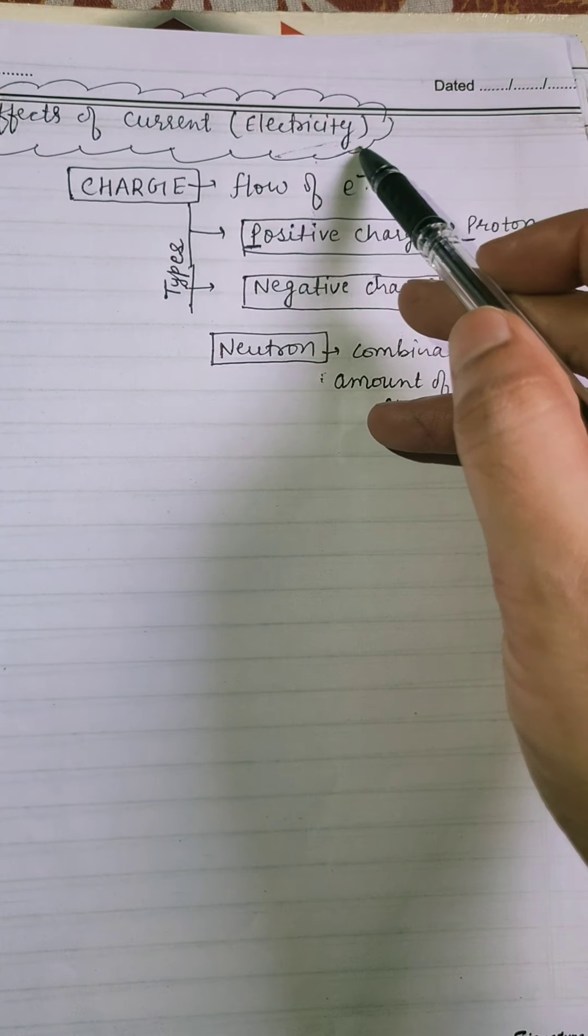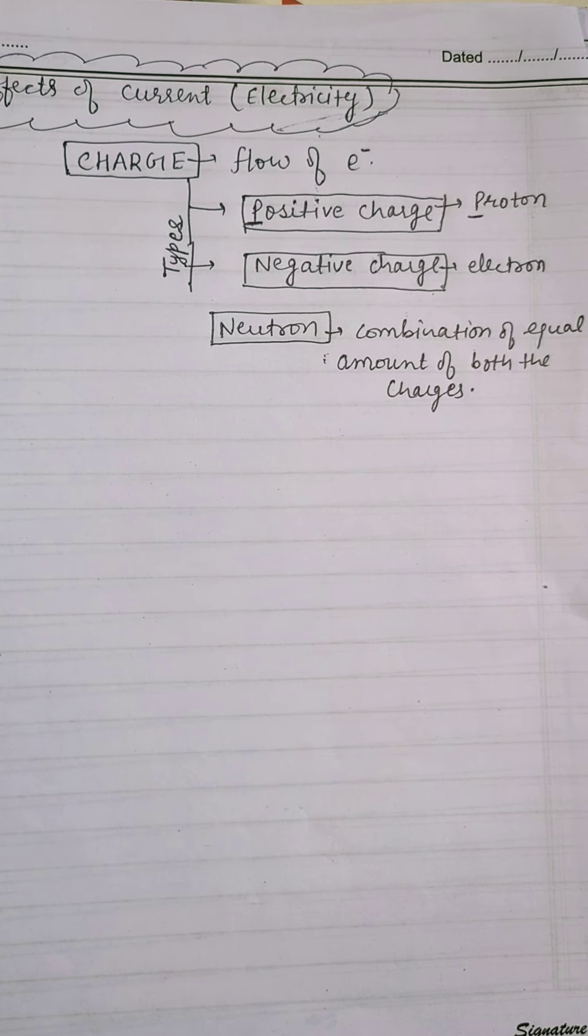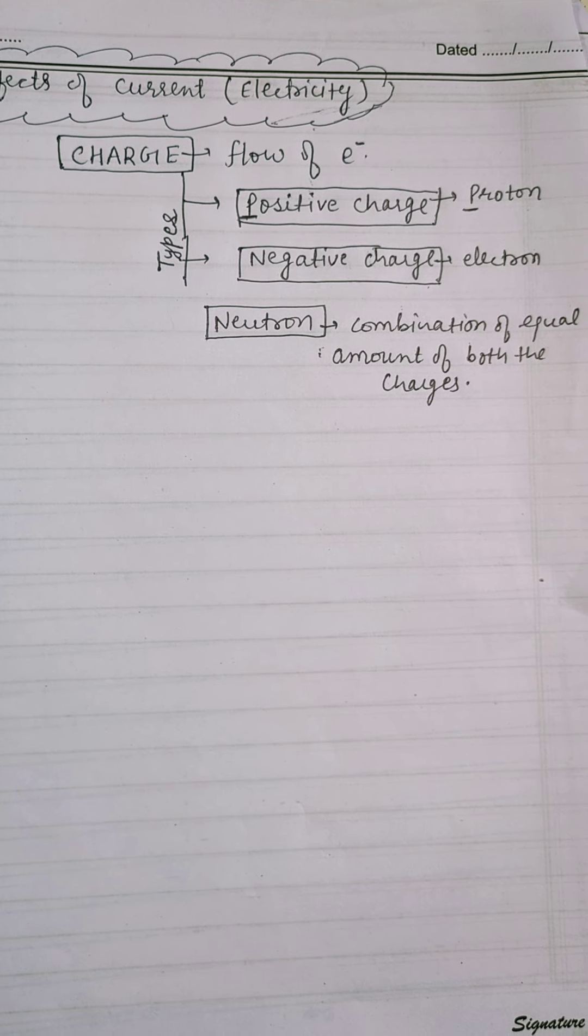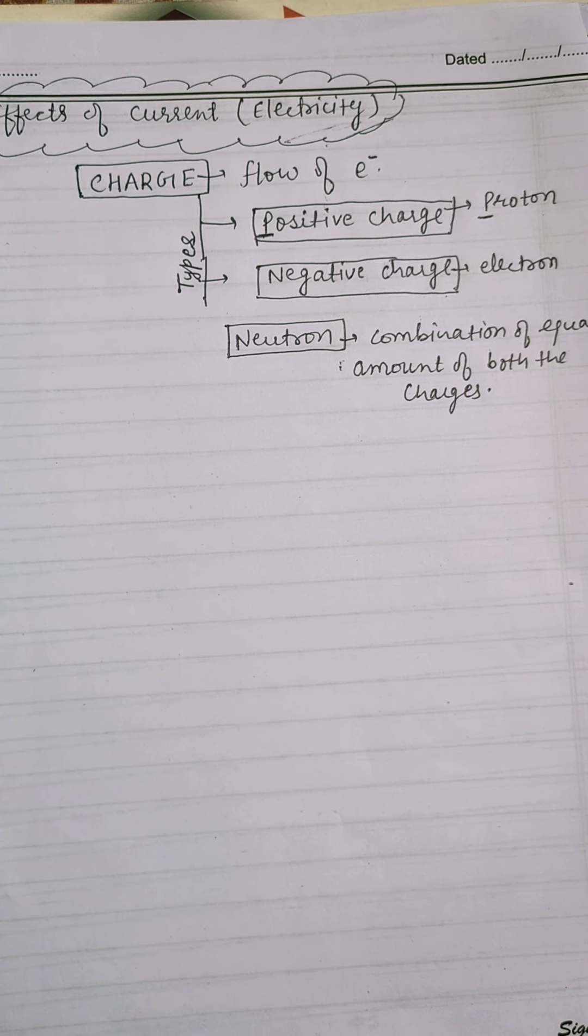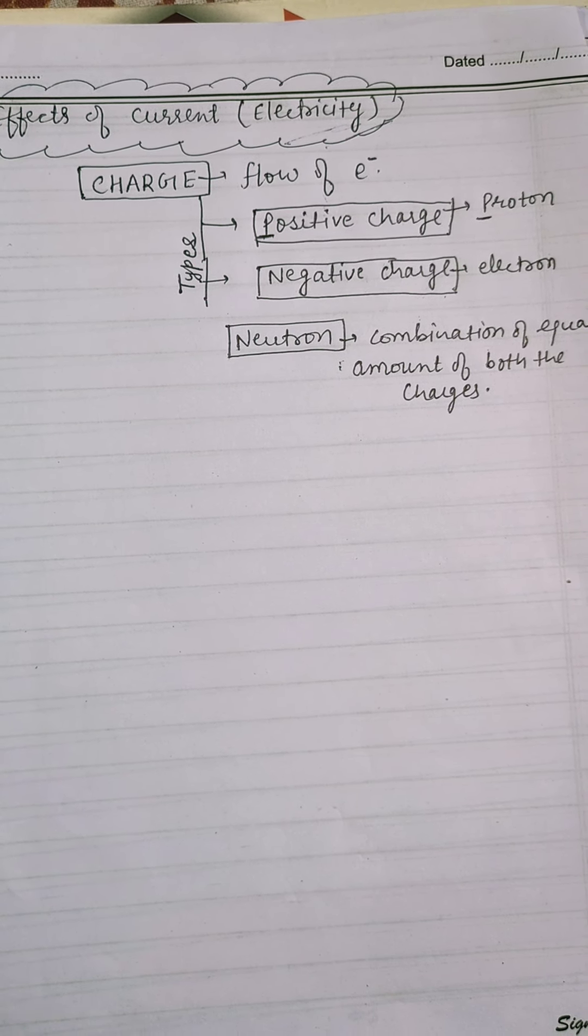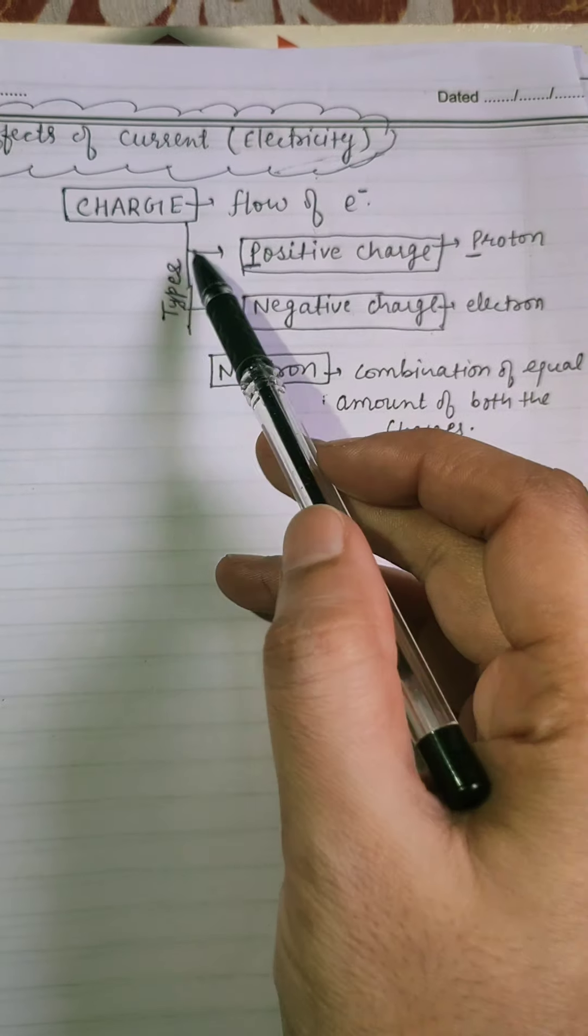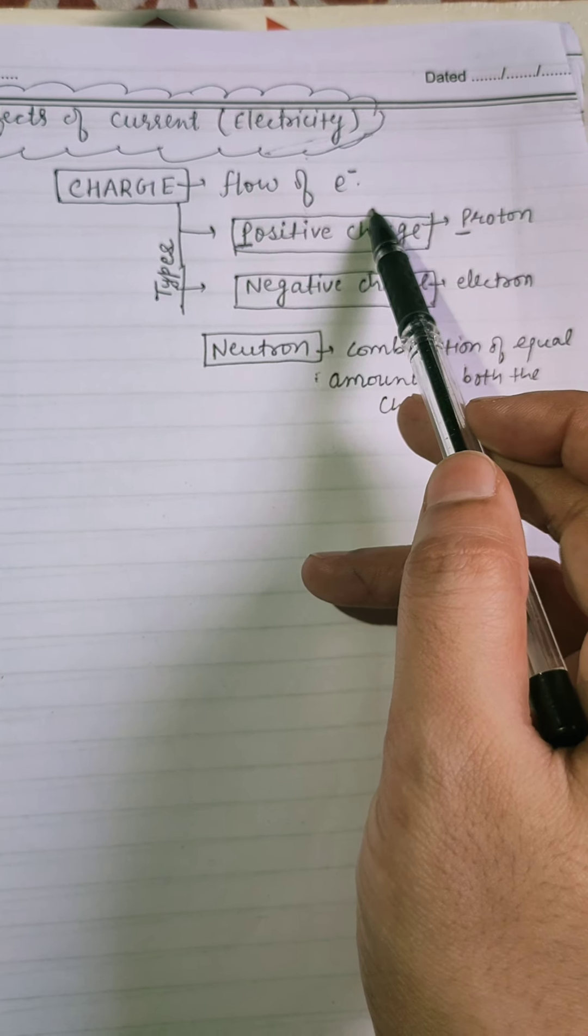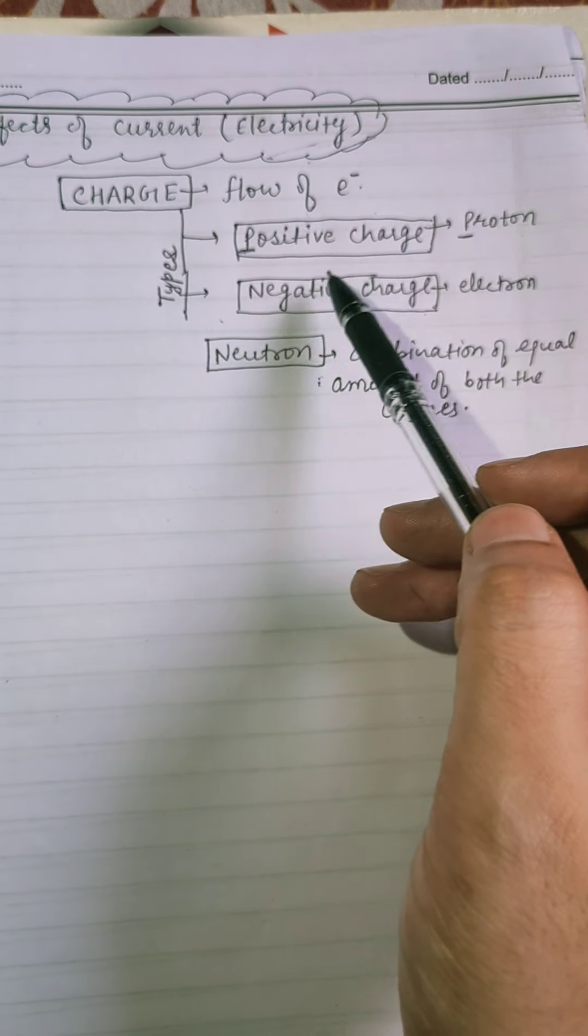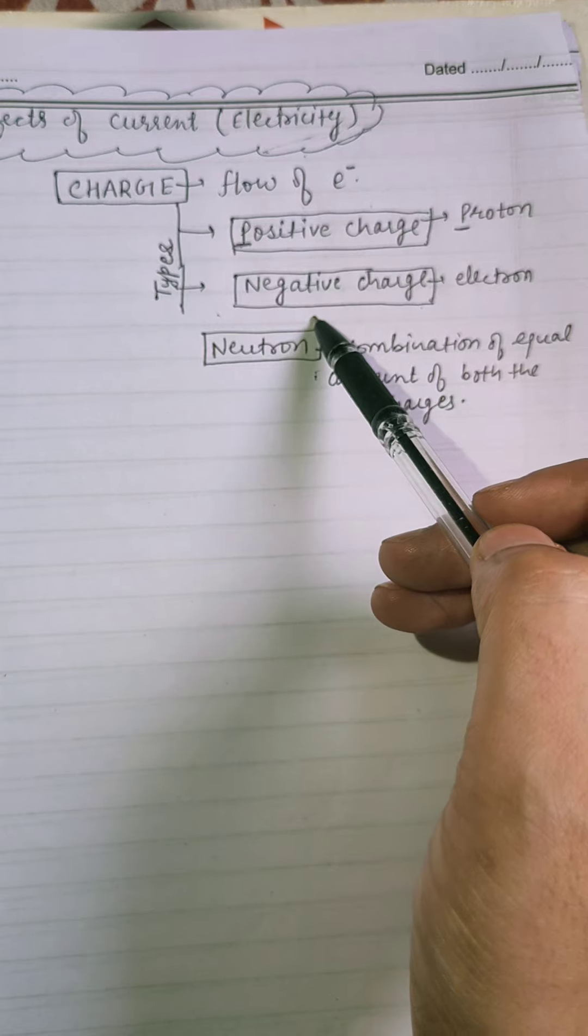As we know, electricity is a source of energy that has made our life comfortable and easy. To understand the concept of electricity, we must know about the electric charge. Charge, it is flow of electron type of charges. There are two types of charges, positive and negative.